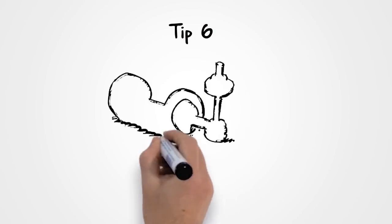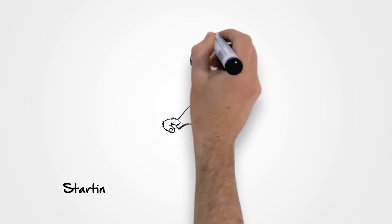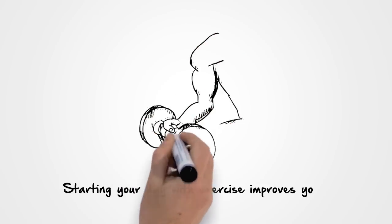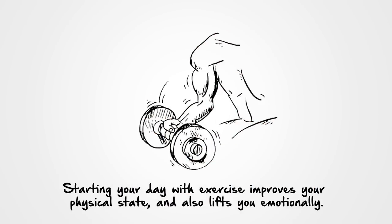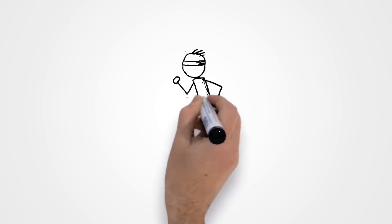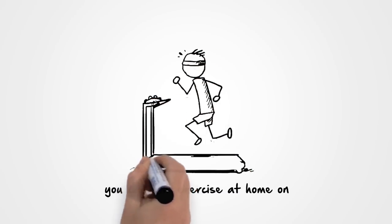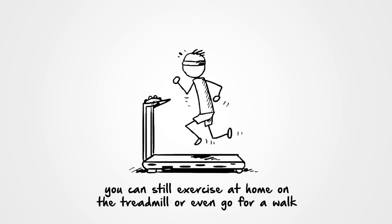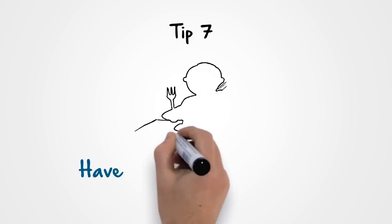Tip 6: Exercise. Starting your day with exercise improves your physical state and also lifts you emotionally. If you can't go to the gym, you can still exercise at home on the treadmill or even go for a walk.